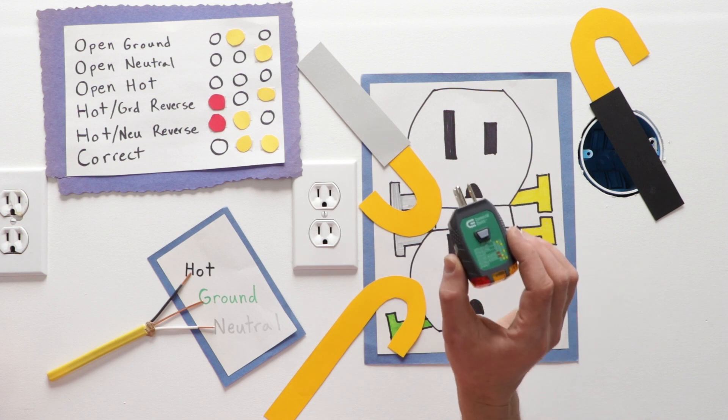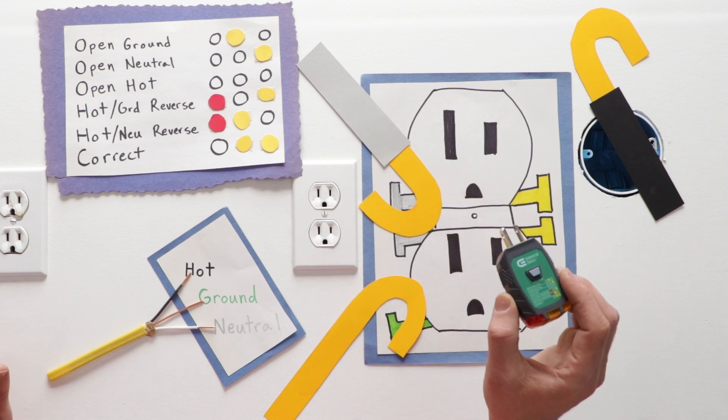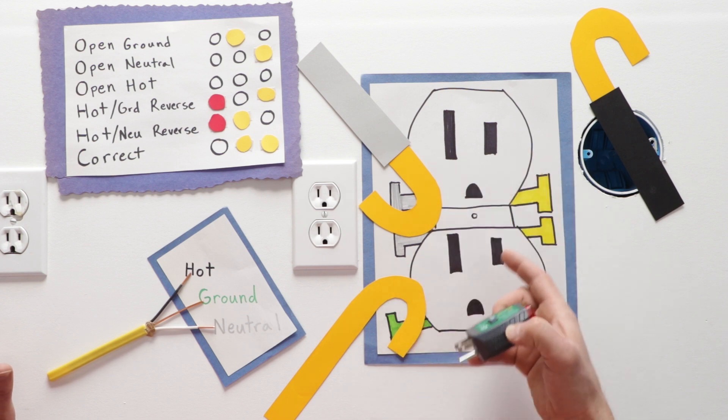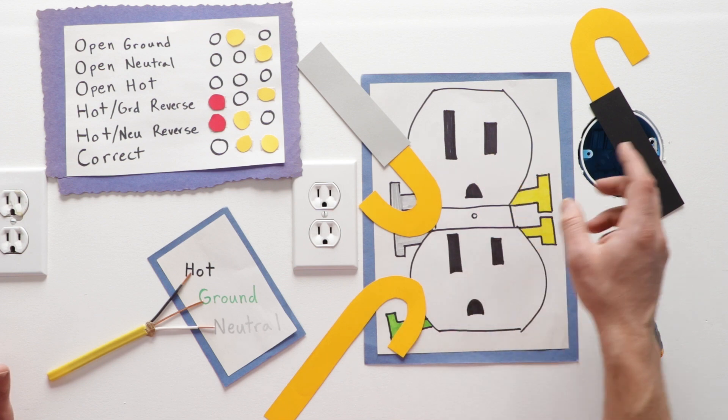But using a receptacle tester is not adequate enough to identify whether or not there is power coming into the box behind the receptacle. Just note, there's no power coming out of the receptacle.